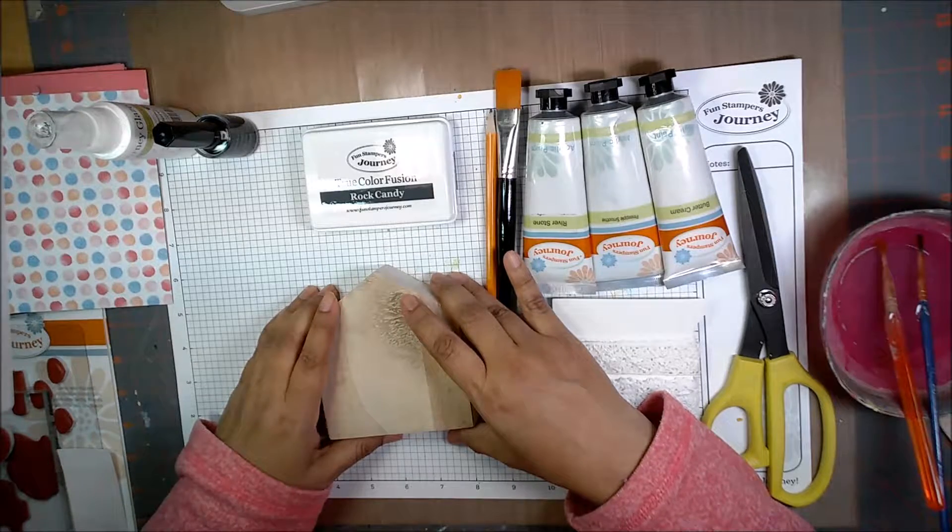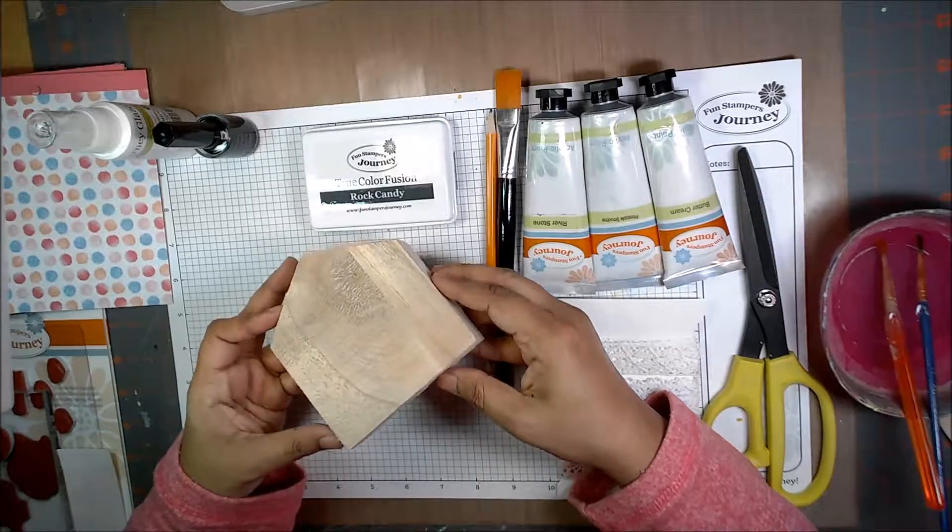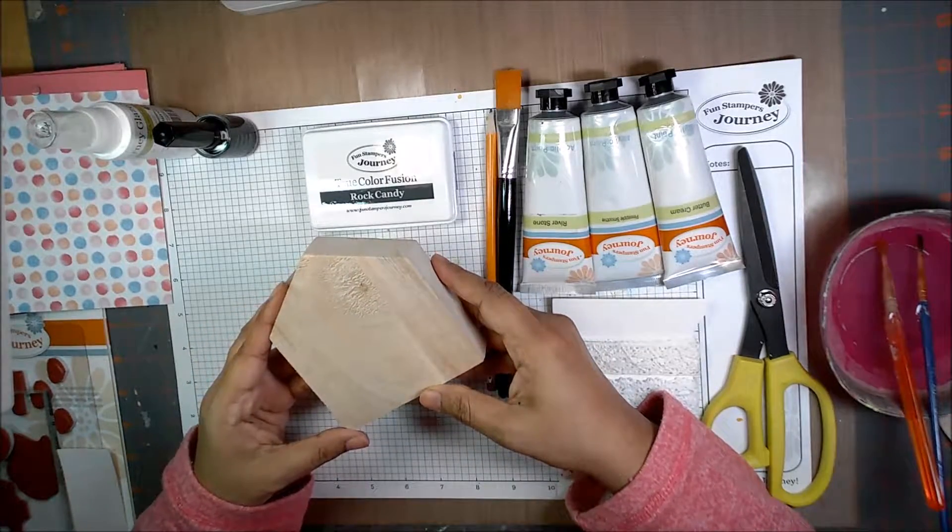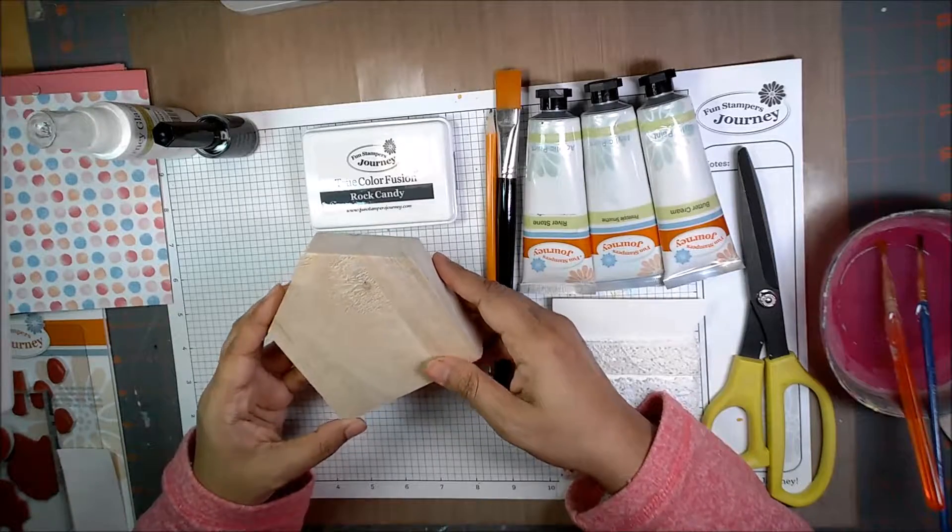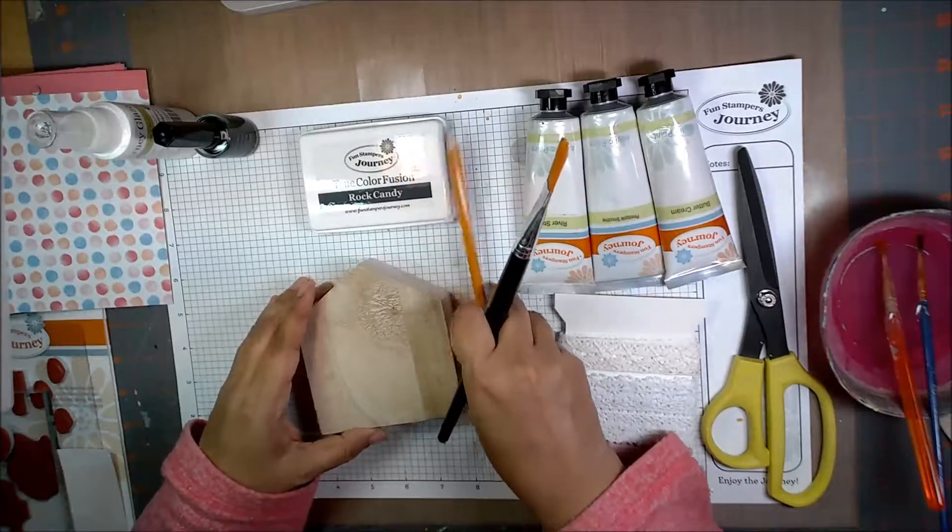Hey everyone, Mo here, and today I'm going to show you how to alter this little house. It's the medium house from the house trio set, and we are going to start by coloring it.